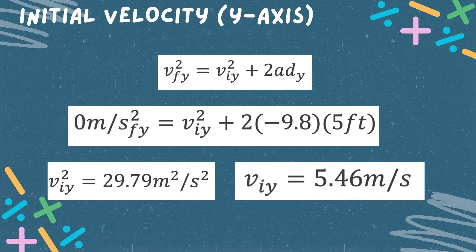We first have to find the initial velocity in the y-axis, or the vertical initial velocity. Using the formula: final velocity squared is equal to the initial velocity squared plus two times the acceleration times the distance. Now let us substitute the given. After solving, we finally get the vertical initial velocity: 5.46 meters per second.